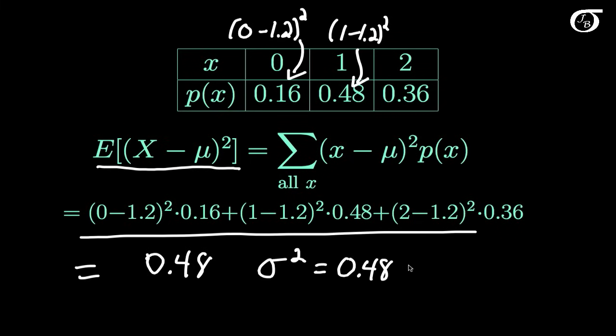And if we wanted the standard deviation sigma of our random variable X, that is simply equal to the square root of 0.48.